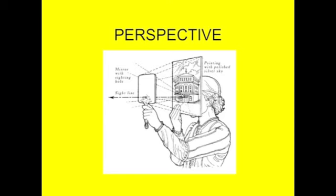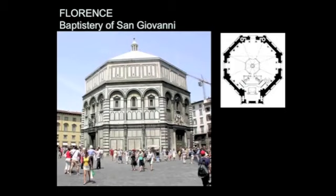Brunelleschi's method was great, but it was really just transferred orally to his friends. There was no publication, no formula that had been written down and could be widely transferred. So for a while, the whole idea of perspective resided solely in Florence.